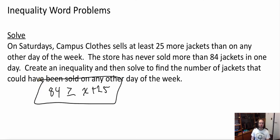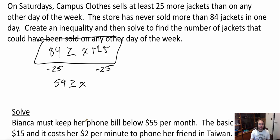Now I want to solve it. To solve it, first thing I'm going to do is minus 25 from both sides. So, I'm going to get 59 must be greater than or equal to x. So, the most they could ever sell or they've ever sold on a weekday, according to this, is 59 jackets.